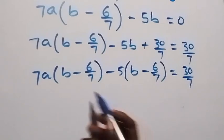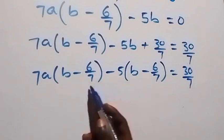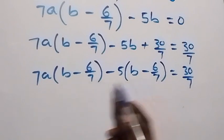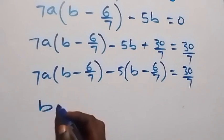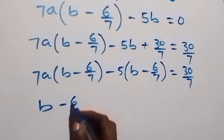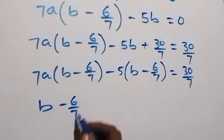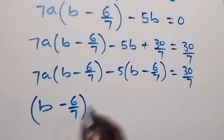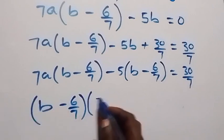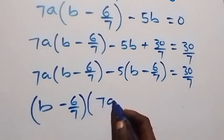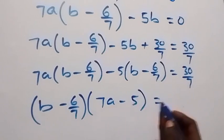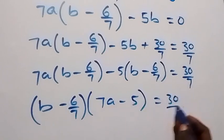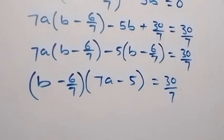From here, these two brackets share a common factor. When we factor that out, we have (b minus 6/7) times (7a minus 5) equals 30 over 7.